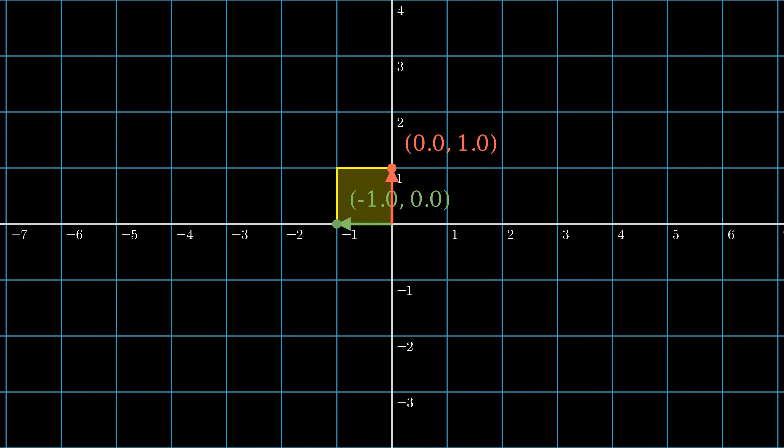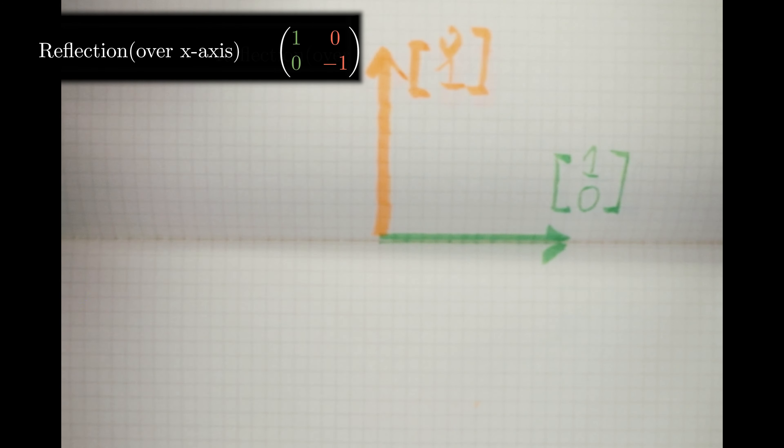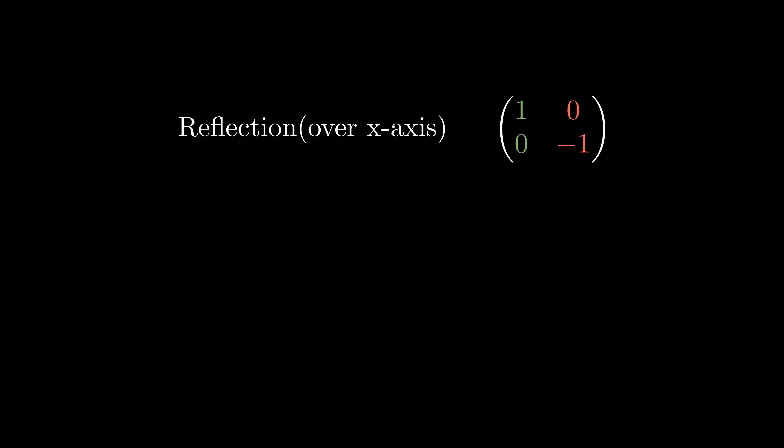Flipping the x basis vector over the y-axis just like this. Reflection over the x-axis is pretty much the same, just flipping the y basis vector over the x-axis. Numerically speaking, the x basis vector stays still while the y-axis got flipped. We can also map to the destination, and here's reflecting over the x-axis.